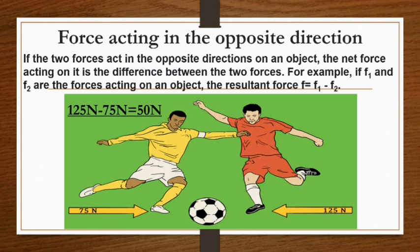Forces acting in the opposite direction. If two forces are acting in opposite directions on an object, the net force acting on it is the difference between the two forces. For example, if F1 and F2 are forces acting on an object, the resultant force is F = F1 − F2.